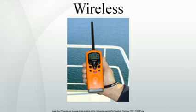Wireless communication is the transfer of information between two or more points that are not connected by an electrical conductor. The most common wireless technologies use radio. With radio waves, distances can be short, such as a few meters for television, or as far as thousands or even millions of kilometers for deep space radio communications.